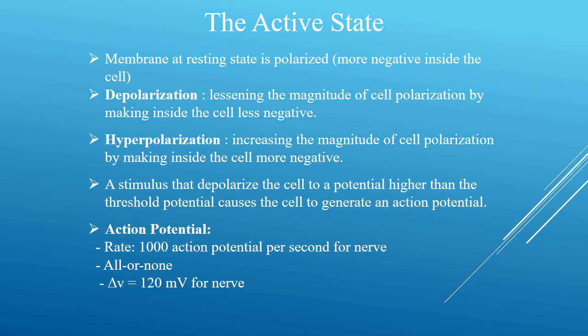When a cell membrane is excited by some form of externally applied energy, the membrane changes its electrical characteristics and begins to allow sodium ions to enter inside. The movement of sodium ions into the cell constitutes an ionic current, which further reduces the barrier of the membrane to sodium ions, and as a net result, sodium ions rush into the cell and try to balance with the ions outside.